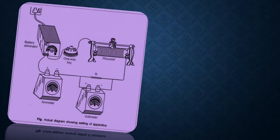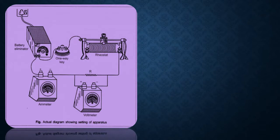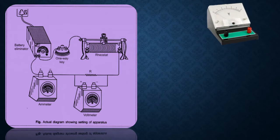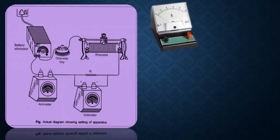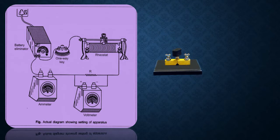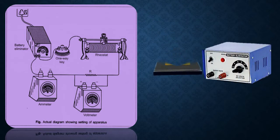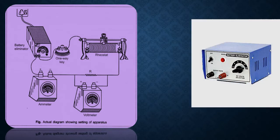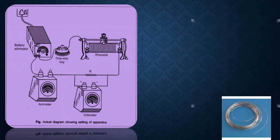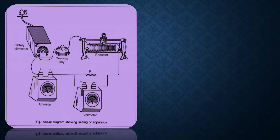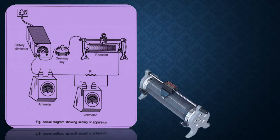Let us look into the apparatus and materials required for this experiment. A voltmeter is a device used to measure voltage. An ammeter measures current and has positive and negative terminals. A one-way key links the battery to other circuit components. We have a battery eliminator which converts AC voltage to DC, with voltage varying from 2 to 12 volts. We also need a resistance wire of unknown resistance and a rheostat.